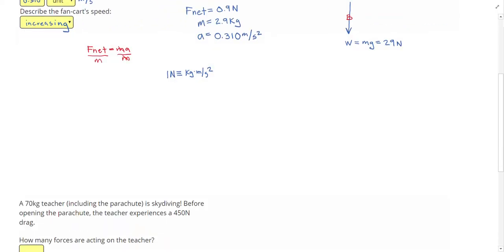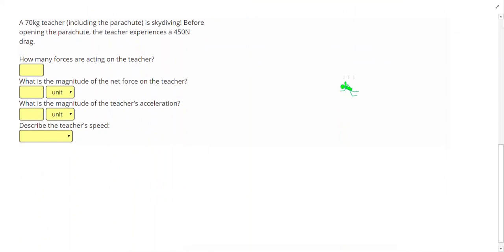Let's take a look at another example. So in our second sample problem, we have a 70 kilogram teacher, including the parachute, is skydiving. Before opening the parachute, the teacher experiences a 450 newton drag.